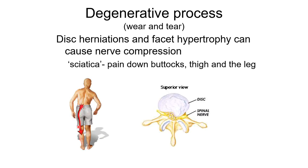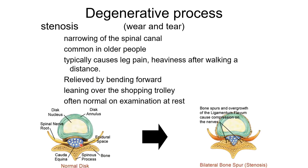The L4-5 level may cause L5 nerve root symptoms, where the pain will go from the buttock down the lateral aspect of the thigh and calf to the top of the foot. As we age, our normal spine will degenerate — facet joints become arthritic and hypertrophy, causing some compression of the cauda equina. The cauda equina is filled with CSF and nerve roots and can accommodate a certain amount of compression before it becomes symptomatic.